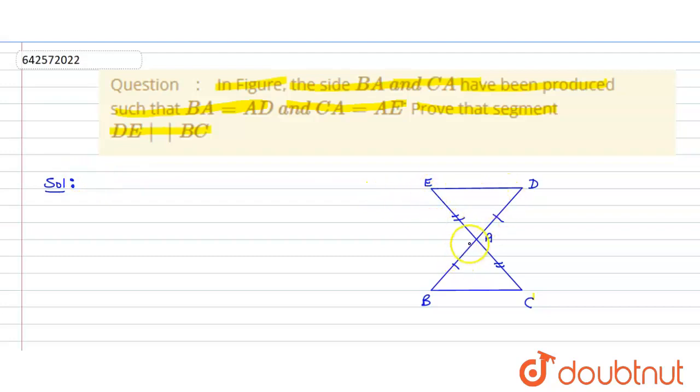Consider triangles EAD and CAB. In these triangles, we have EA equals AC, which is given. Also, AD equals AB, which is also given.